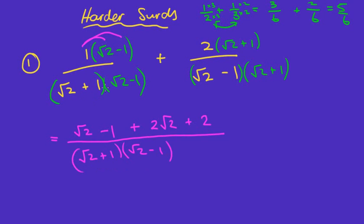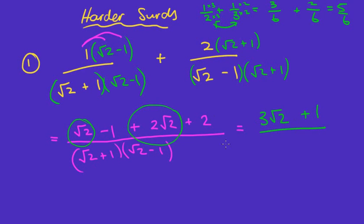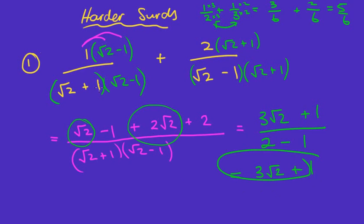Let's simplify. One times root two is simply root two. One times negative one is simply negative one. Plus two times root two is two root two. And two times positive one is just two. It's all over the same common denominator, which is root two plus one and root two minus one. Now, root two plus two root two gives me three root two, and negative one plus two — well, two minus one is one. Then simplifying the denominator: square root of two gives two, difference of two squares gives a minus, one squared is one. So the answer is three root two plus one, all over one — which is just three root two plus one.